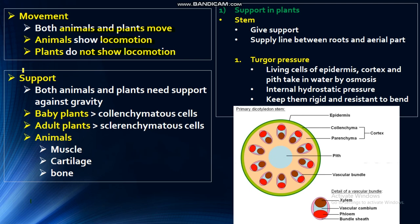Both animals and plants need support against gravity. They need support. If we look at plants — the young plants, they have a green stem and special types of cells called collenchyma cells. These provide support. The adult plants have special types of cells called sclerenchyma cells. So young plants have collenchyma cells for support, and adult plants have sclerenchyma cells.